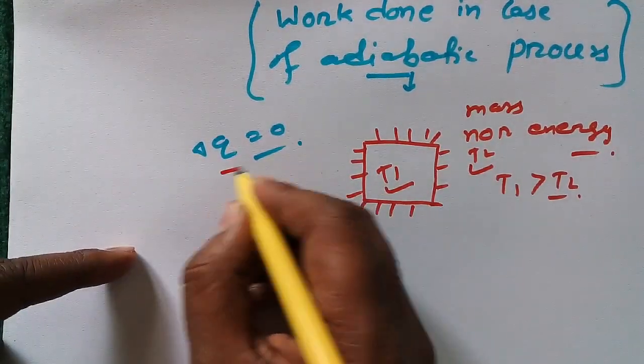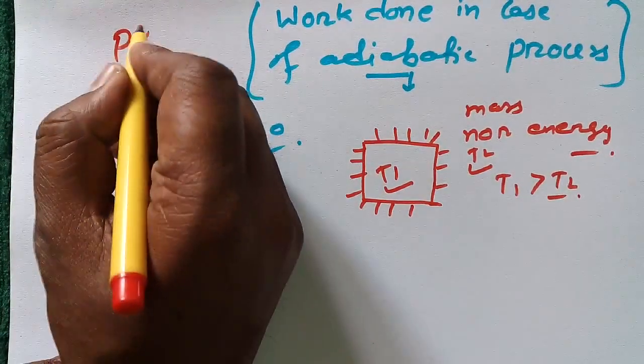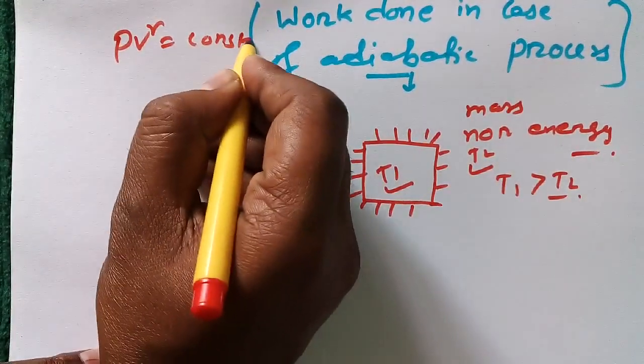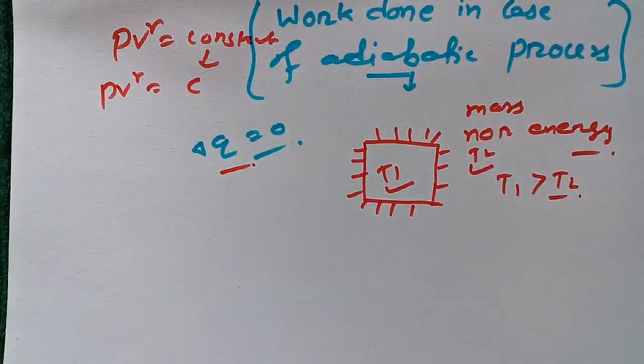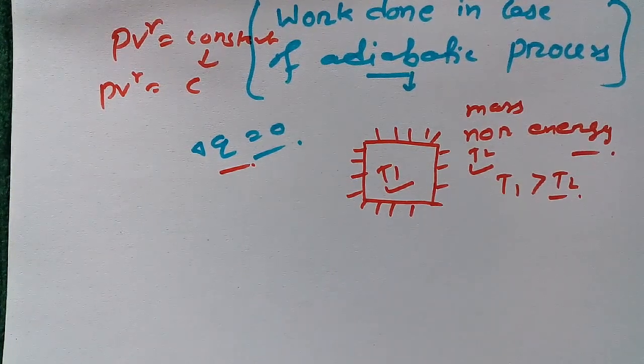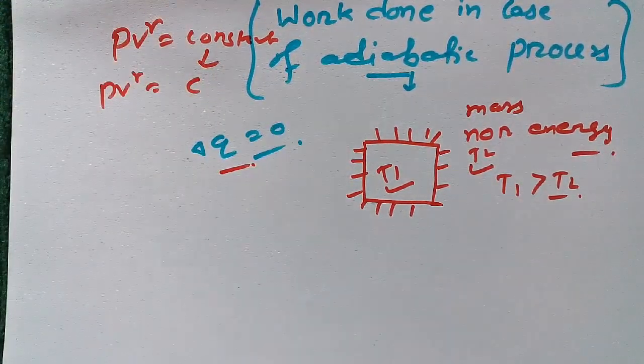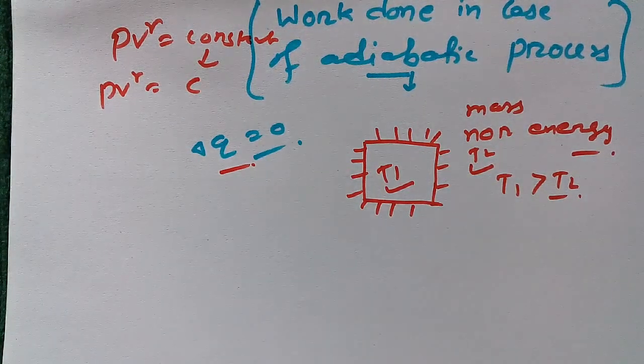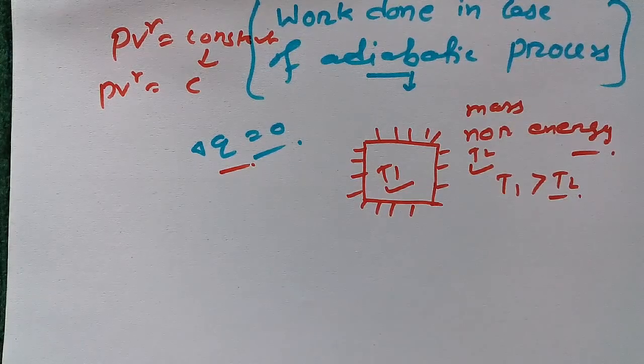Now according to this, we have the equation PV to the power gamma is equal to constant. We can write PV^γ equals C. So from this equation, we have to derive the formula for work done in case of adiabatic process. Let's go for it.